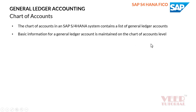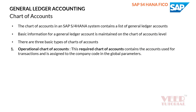Basic information for a general ledger account is maintained at the chart of accounts level. There are three basic types of chart of accounts. The first is the operational chart of accounts — this is mandatory. It contains accounts used for transactions and is assigned to the company code in the global parameters. We can assign one chart of accounts to many company codes, or create a separate chart of accounts for each company code.